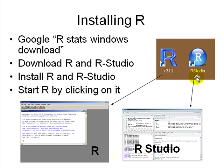Once you install, you'll get these icons. The version number may be different and the icon may look different on your Windows. Double-click on it and it will open up the R window or R Studio window. Let's look at the windows in detail.